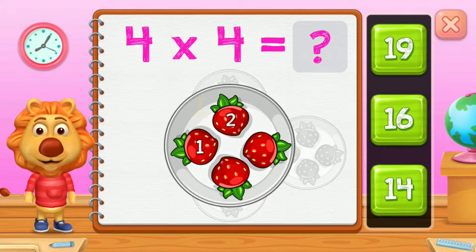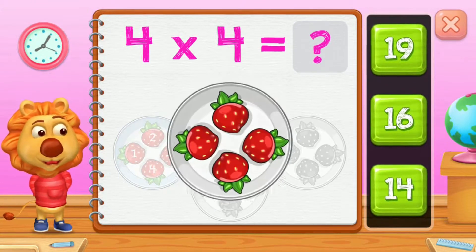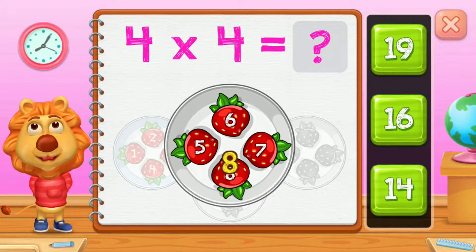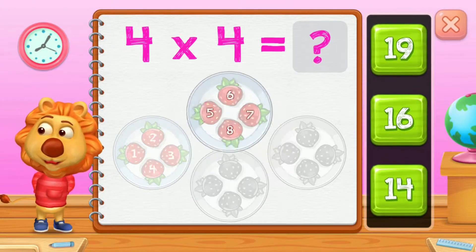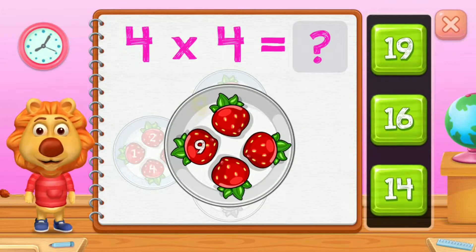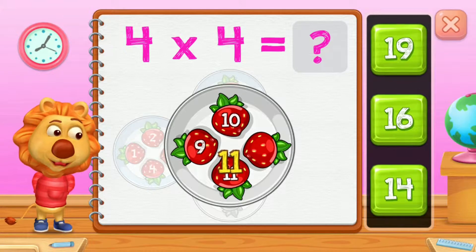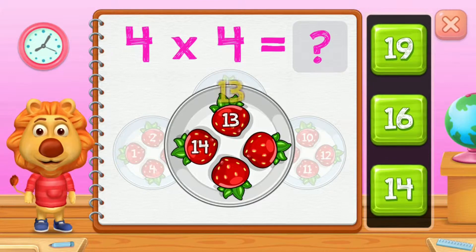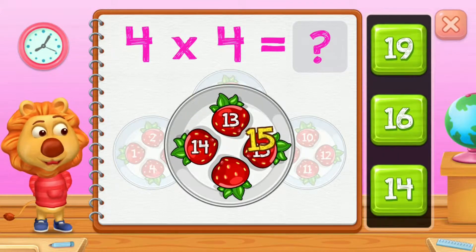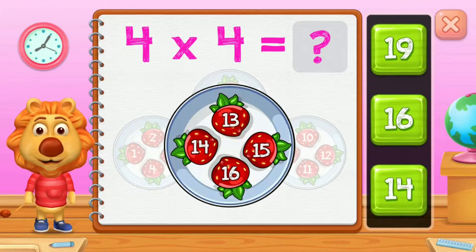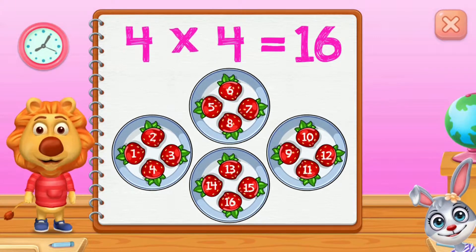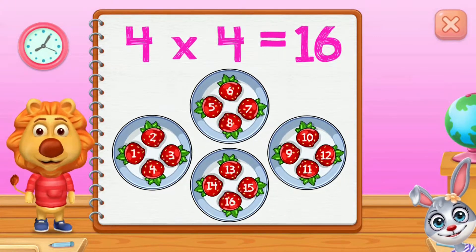1, 2, 3, 4, 5, 6, 7, 8, 9, 10, 11, 12, 13, 14, 15, 16. 4 groups of 4 equals 16.